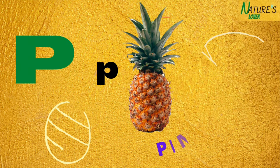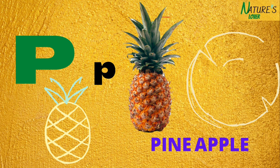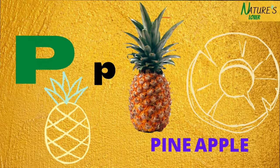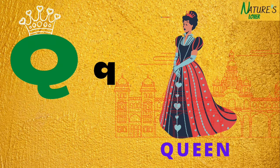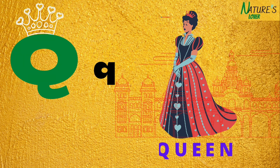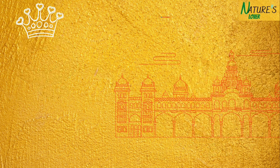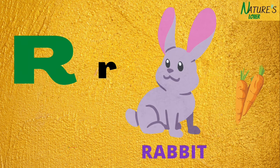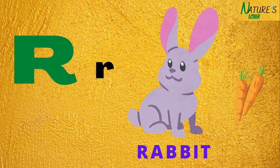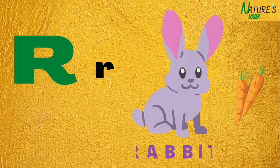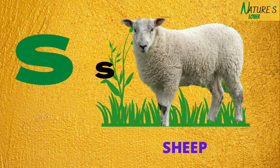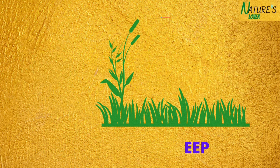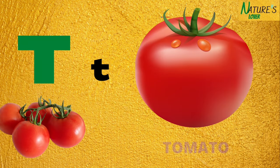P for pineapple, Q for queen, R for rabbit, S for ship, T for tomato.